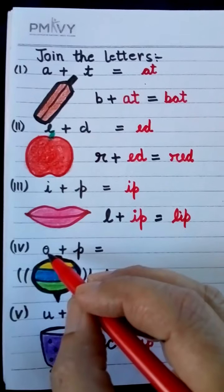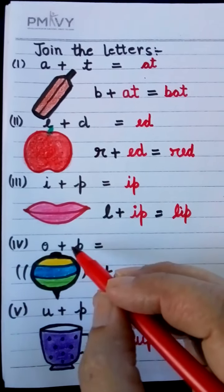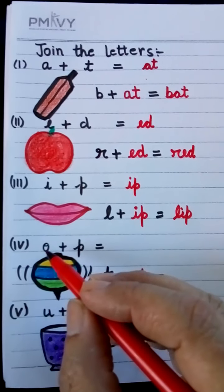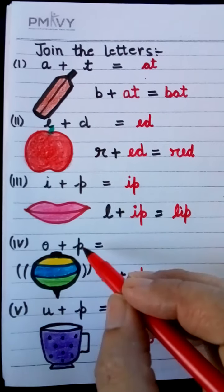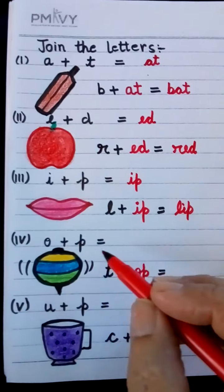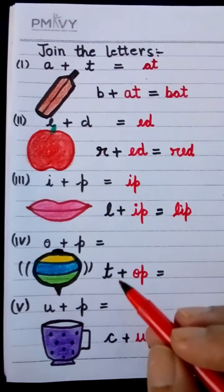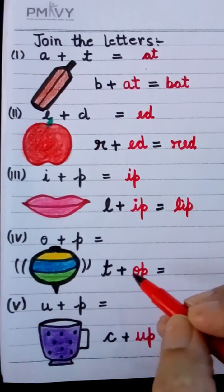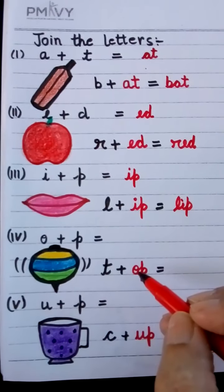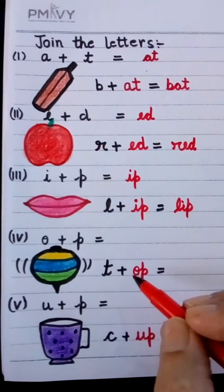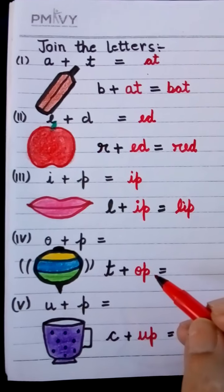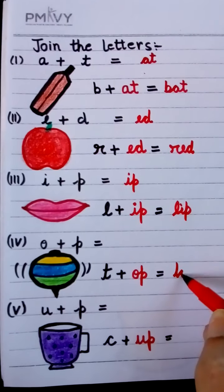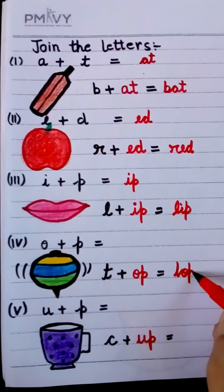This is O-P. Which sound is this? O-P. We will join T also. T-O-P. T-O-P. T-O-P.